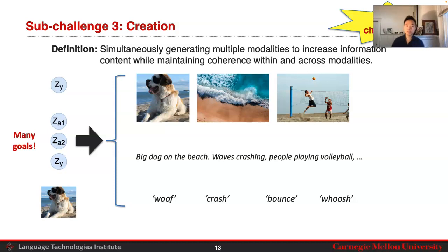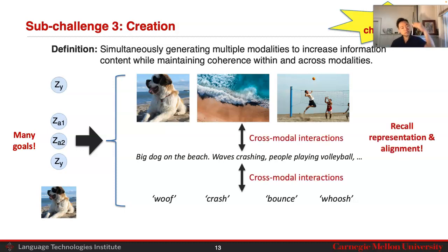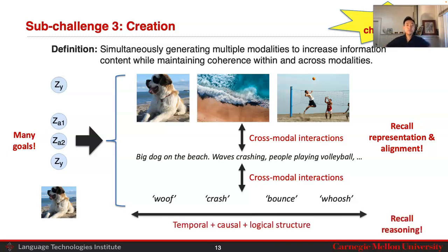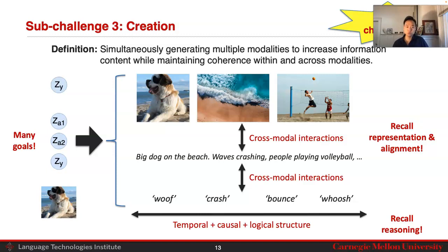One big correspondence you want to capture is that there should be cross-modal interactions that are realistic across these modalities — recalling representation and alignment to ensure these cross-modal interactions actually exist. Within the same modality, you also want to make sure there is some temporal, causal, and logical structure that respects how these modalities are generated naturally. Certain ideas from the reasoning sub-challenge could be useful here.